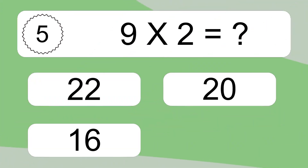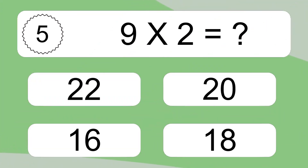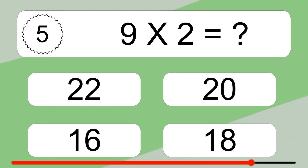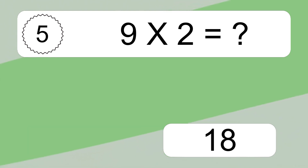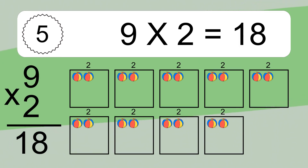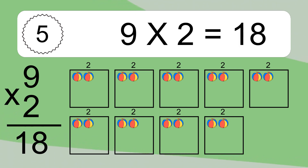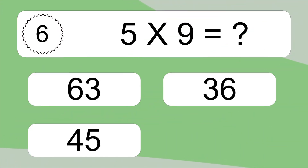9 times 2 equals what? 9 times 2 equals 18. We have 9 boxes and each box has 2 colorful balls inside. If you count all the balls in all the boxes together, you will have 9 times 2 balls. This equals 18 balls.